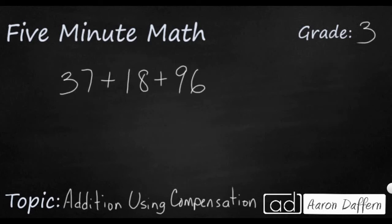So this time, I've got three two-digit numbers: 37, 18, and 96. I want to add them all together, and I want to try to do it mentally. So let me show you how we can use compensation to add this mentally. What I'm looking for are numbers that are close to the next 10. And actually, all three of them are pretty close.